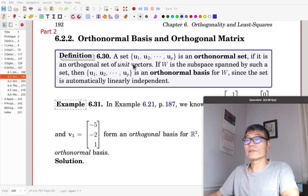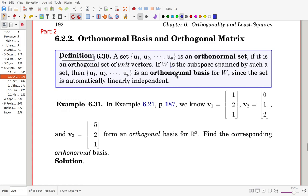A set of vectors u1 to up is an orthonormal set if it is an orthogonal set of unit vectors. If the set is orthogonal and each vector has length 1, then it is an orthonormal set. If W is the subspace spanned by such a set, then the set is an orthonormal basis for W because the set is automatically linearly independent.